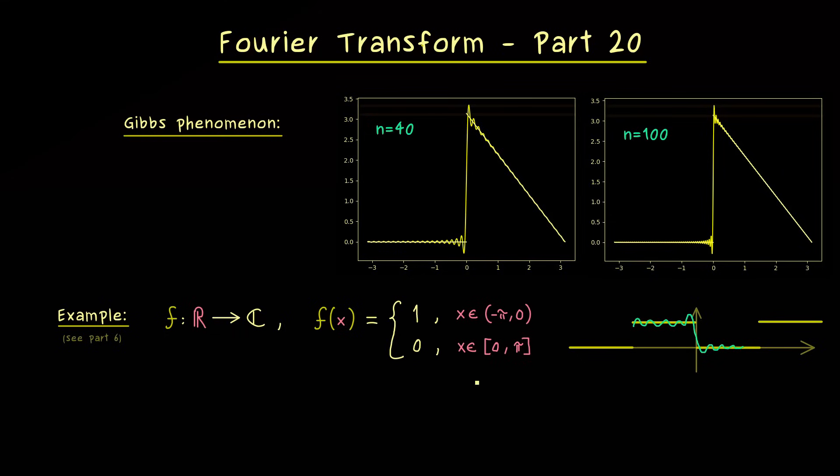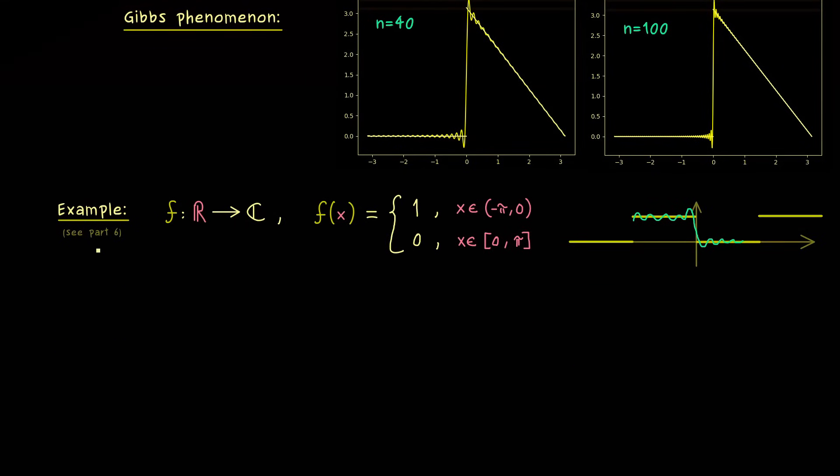And here the good thing is that we don't have to calculate the Fourier series because we've already done that in part 6. In fact, our function f is almost an odd function. It's just shifted to the top by one half. Therefore we have the constant one half and then only sine terms in the Fourier series.